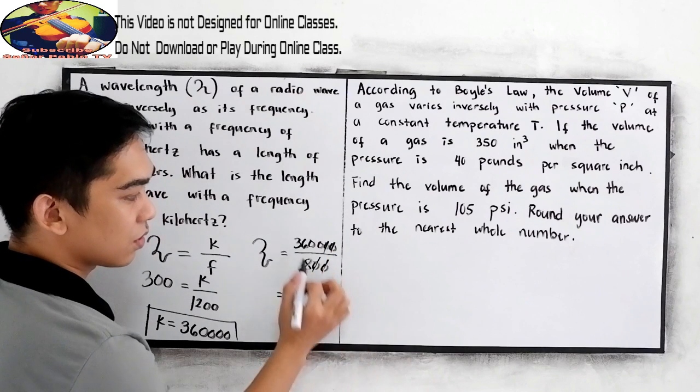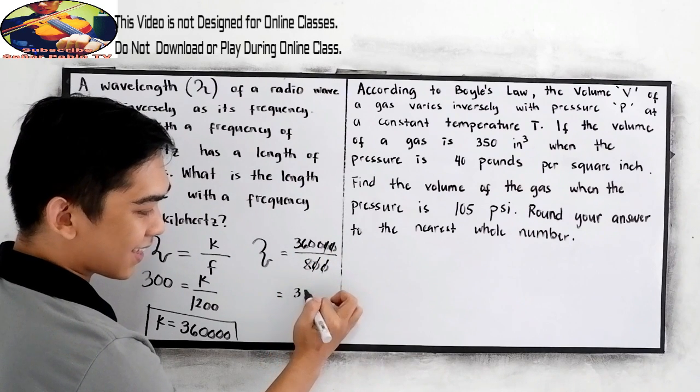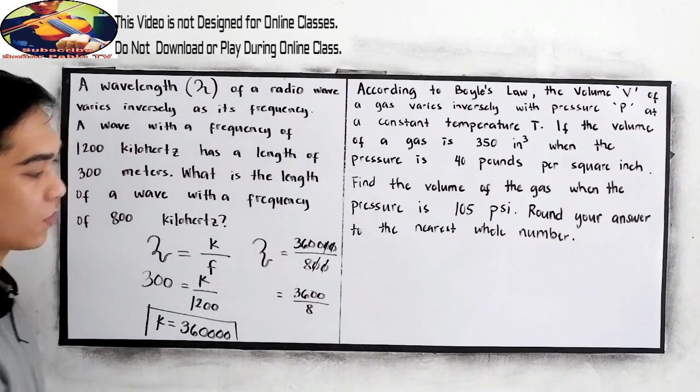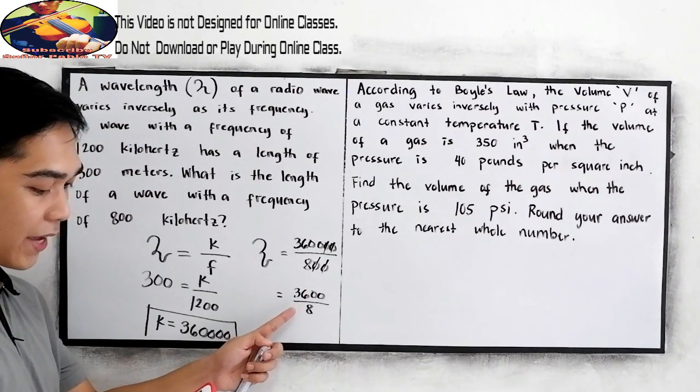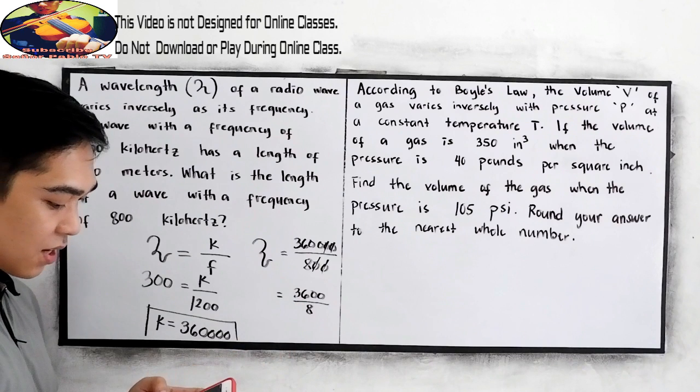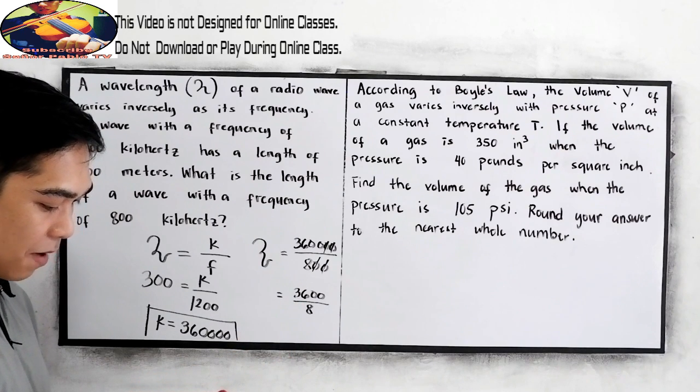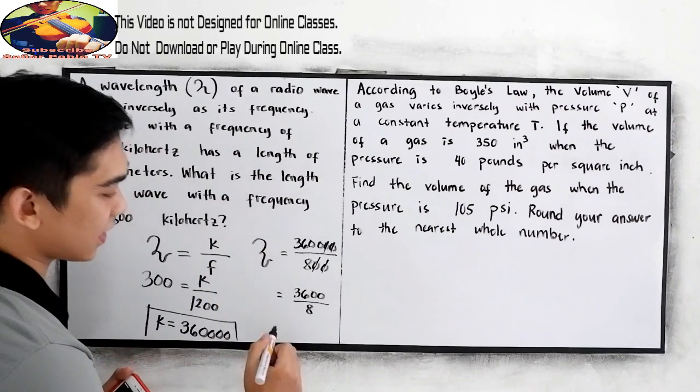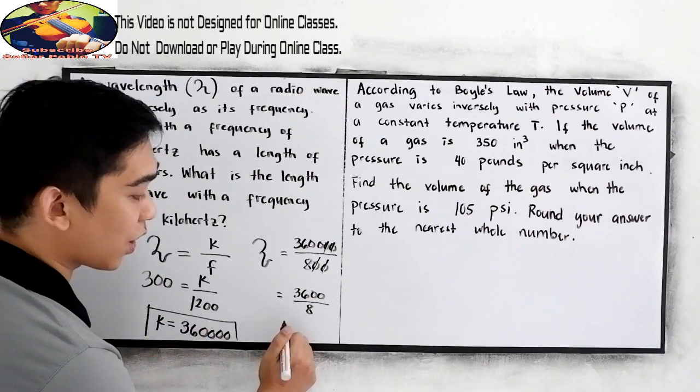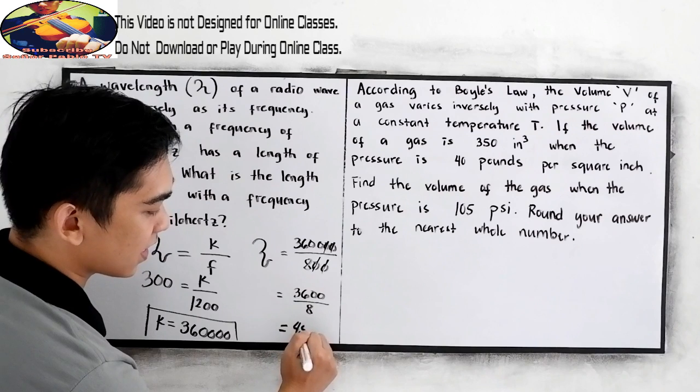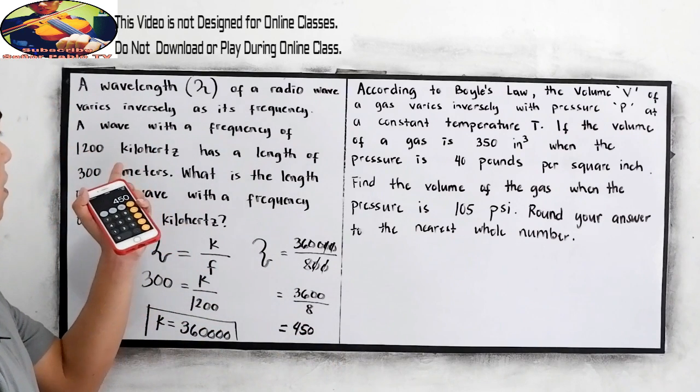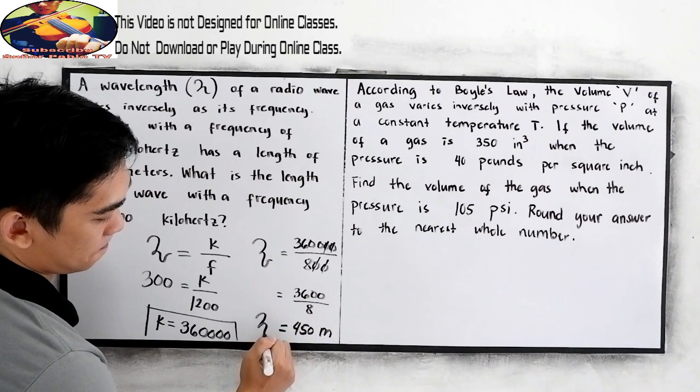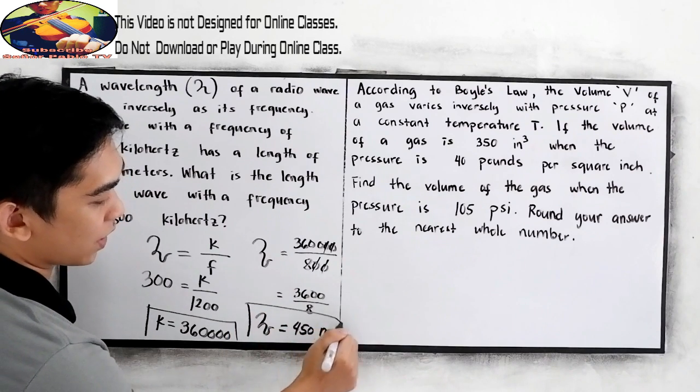So, we can cancel 0s, 1, 2, 1, 2. So, we have 3,600 divided by 8. So, let us now divide 3,600 divided by 8. Our wavelength is 450 meters. That would be our wavelength.